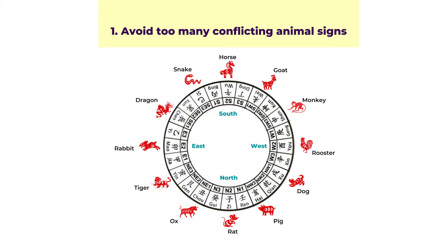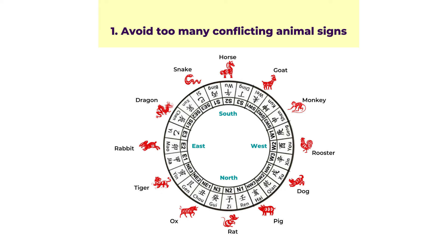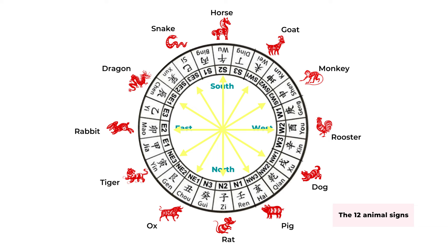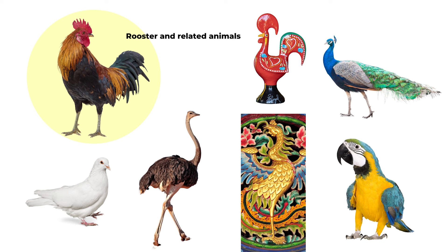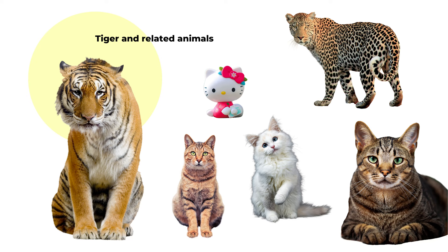The first one is about animals. When we talk about animals, we think about the 12 Chinese animal signs. We have a basic chart of the 12 zodiac signs and their relationships. A lot of animals are not in the 12 animal signs, but can be considered related to the 12 signs. For example, the rooster is related to other birds, maybe phoenix or peacocks — we can categorize them together. And the cat can be put into the tiger family.